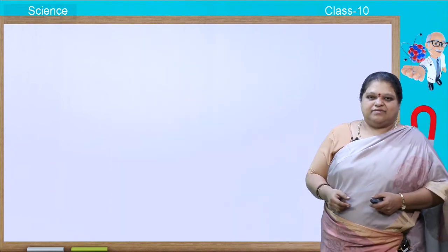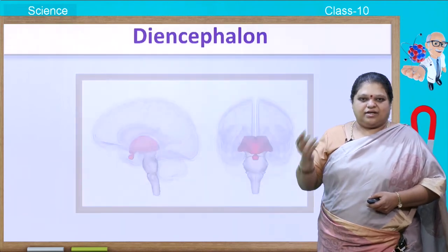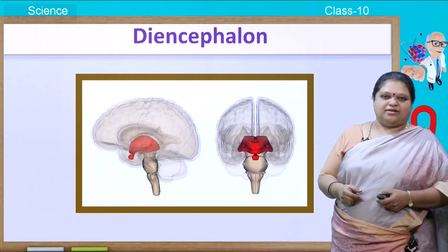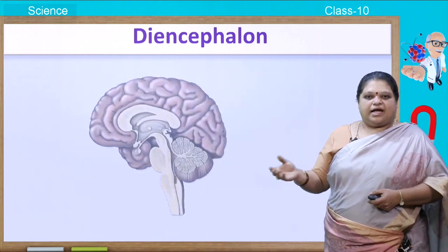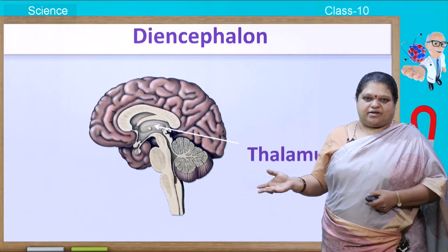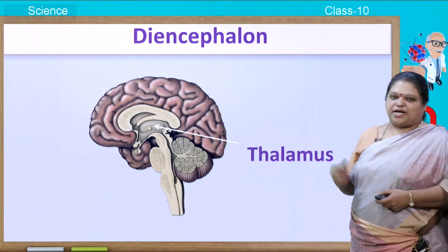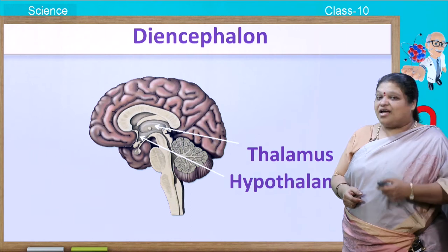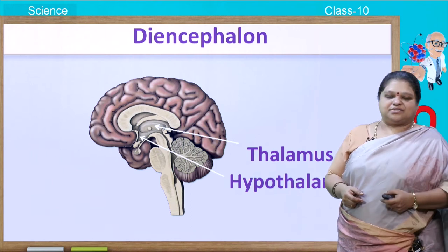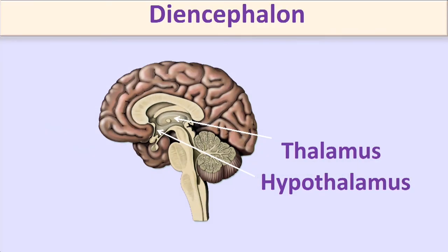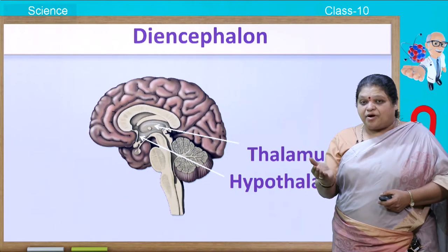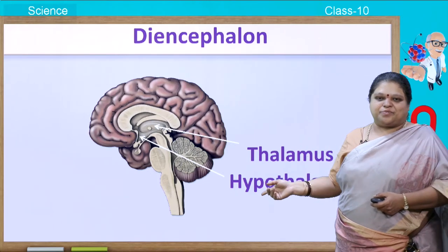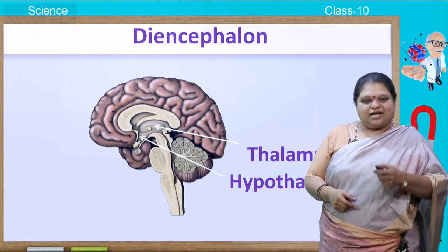Coming to the diencephalon — it has two parts: the thalamus and the hypothalamus. The thalamus is the upper portion. Hypo means below, so below the thalamus is the hypothalamus. Below the hypothalamus you find the pituitary gland.